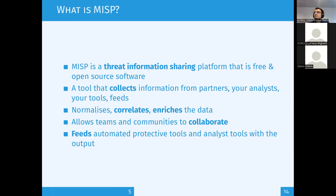Another important thing is enrichment of data. We have an extensive system called MISP modules where you can enrich data — querying passive DNS services, other vendors with APIs, and so on, integrated automatically into MISP. When you start with such information, you want to allow teams and organizations to collaborate. One of the core aspects of MISP is to share information with other partners — for example in an ISAC, you want to share with partners, collaborate, and add information into events.